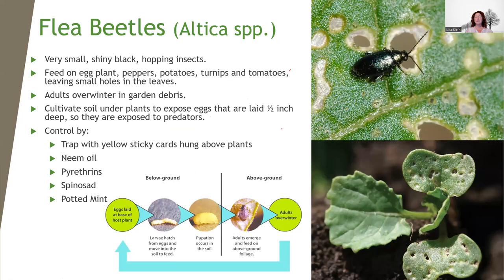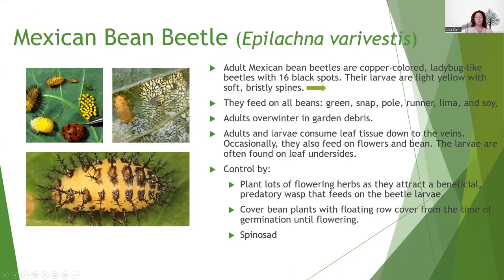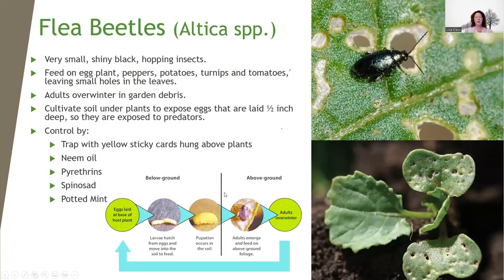Flea beetles are shiny black little insects that hop around, feeding on eggplants, peppers, potatoes, turnips, and similar plants. They overwinter in garden debris, so make sure you're cleaning up all the debris from your dead annuals — that'll get rid of where they're going to overwinter and effectively eliminate the next year's first generation. You can trap them with sticky yellow cards. Use neem oil, pyrethrins, spinosad, or potted mint as an essential oil repellent — make sure it's potted because mint is invasive and you don't want it taking over your garden.